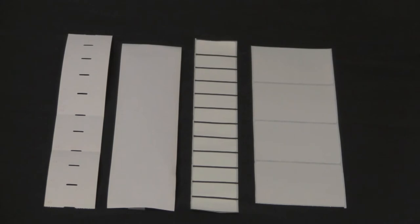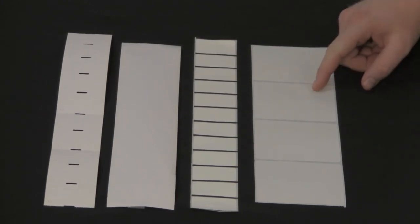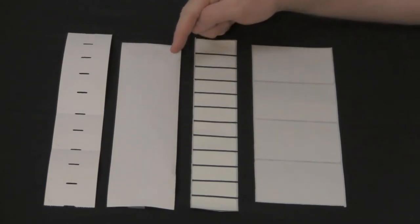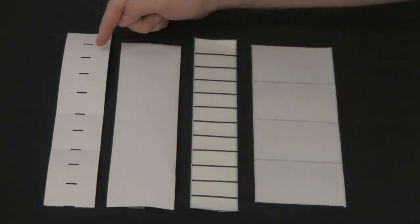The different label types that can be used in this printer are gap, black bar, continuous, and notched or hole media.